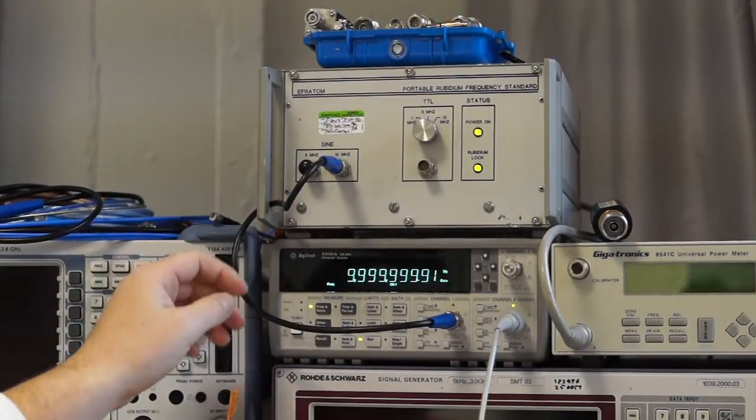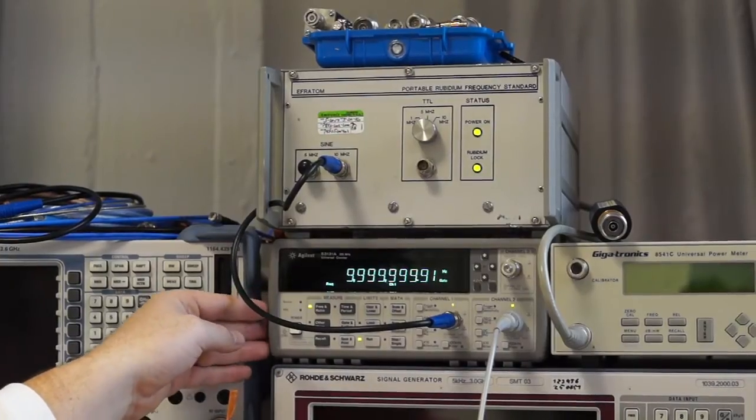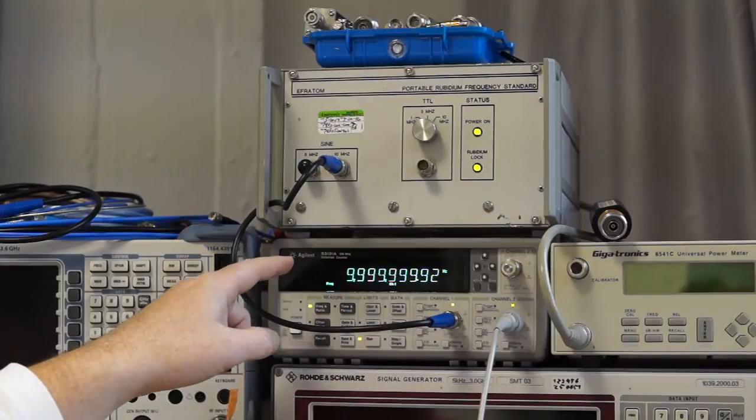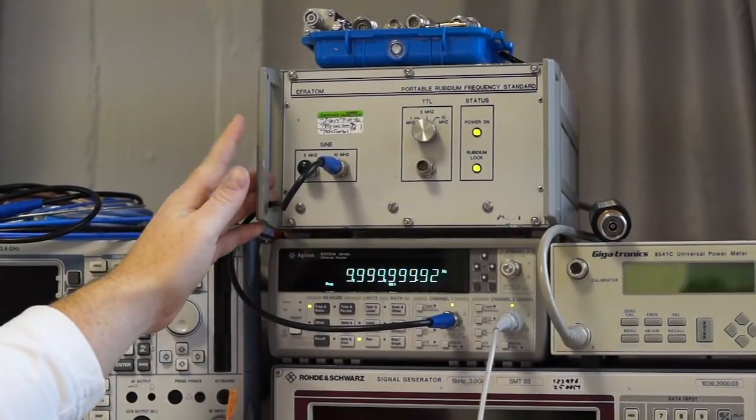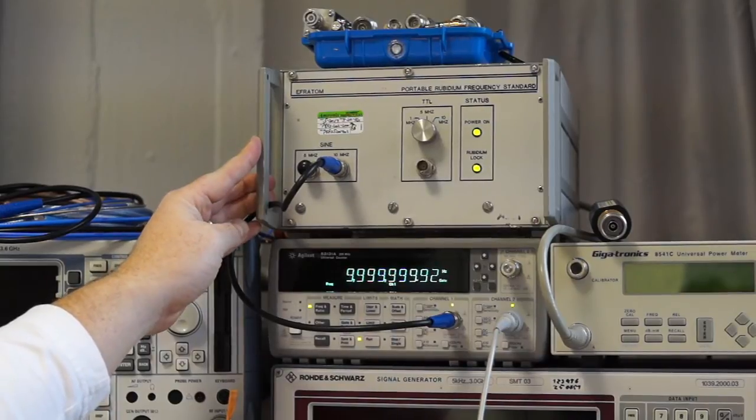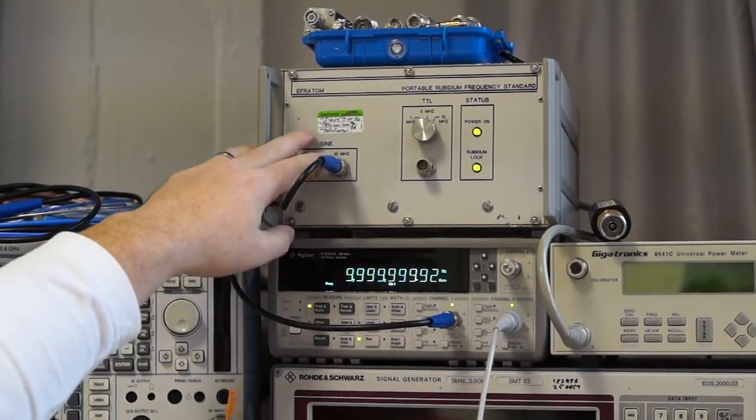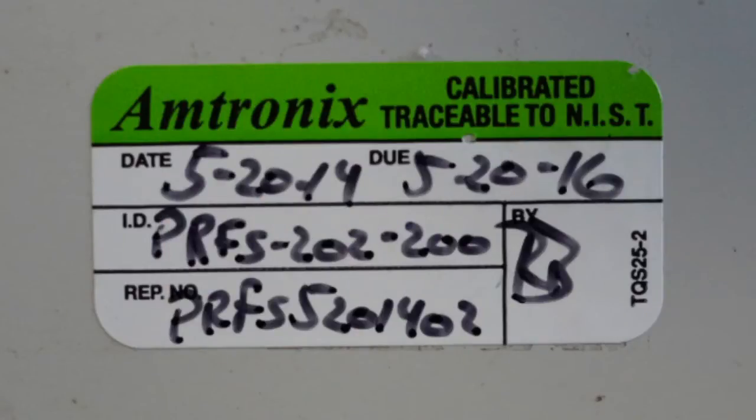What's important is that the frequency counter itself already has a very precise clock, but to be sure that this clock is running correctly, we calibrate it against our rubidium frequency standard before every measurement and after every measurement. The frequency standard itself is calibrated, traceable to the National Institute for Standard and Technology.